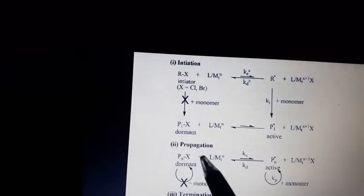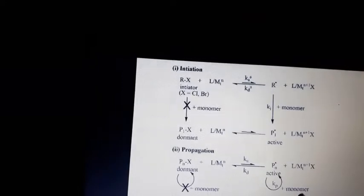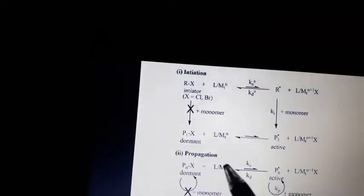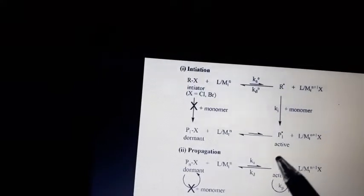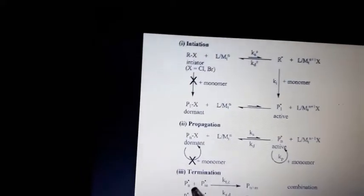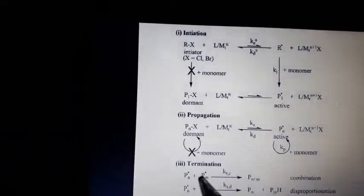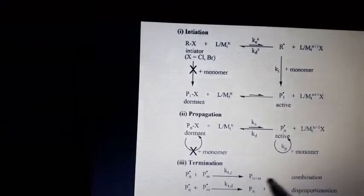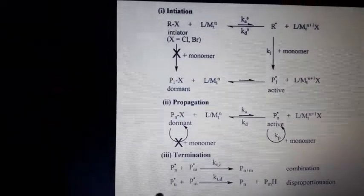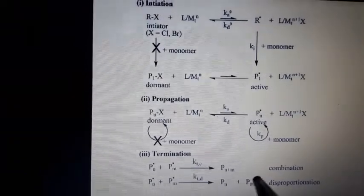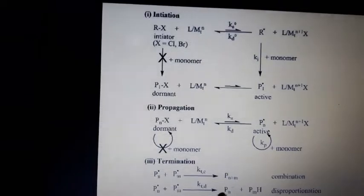The next step is propagation, in which more monomer is added to the growing active polymer chain. An equilibrium is established between the dormant state — in which no monomer can be added — and the active state. When the concentration of free radicals is reduced, the equilibrium shifts automatically and polymerization continues. Termination occurs when two growing polymer chain radicals combine together, or by disproportionation, which involves a redox reaction where one species is reduced by hydrogen addition and another is oxidized.